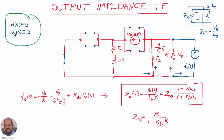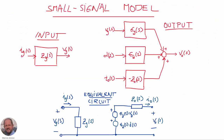For the output impedance of our converter, we make zero both perturbations on the duty cycle and on the peak line voltage. We have this equivalent circuit with only the current source that depends on the output voltage, and we add a current source at the output. By analyzing the circuit again, we obtain this expression with the same dynamics as before and the DC value for the output impedance of the power factor correction converter.